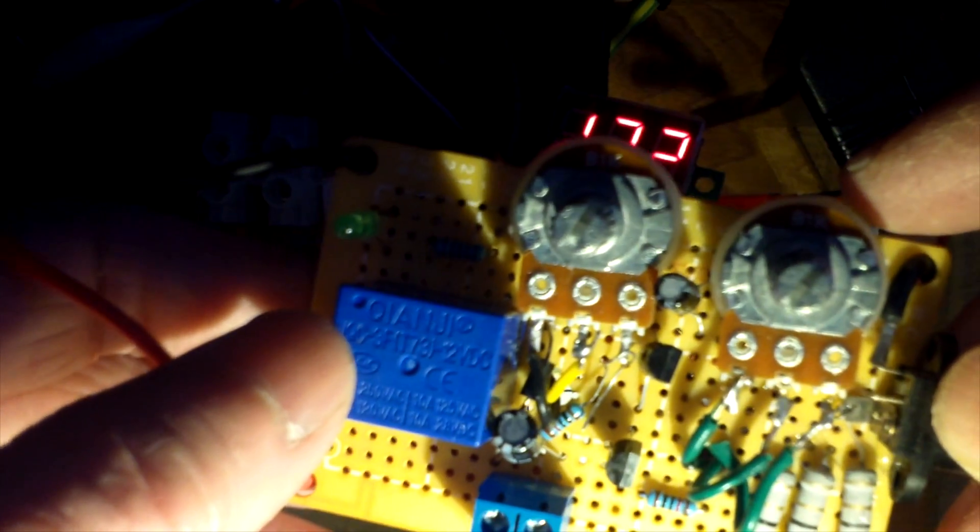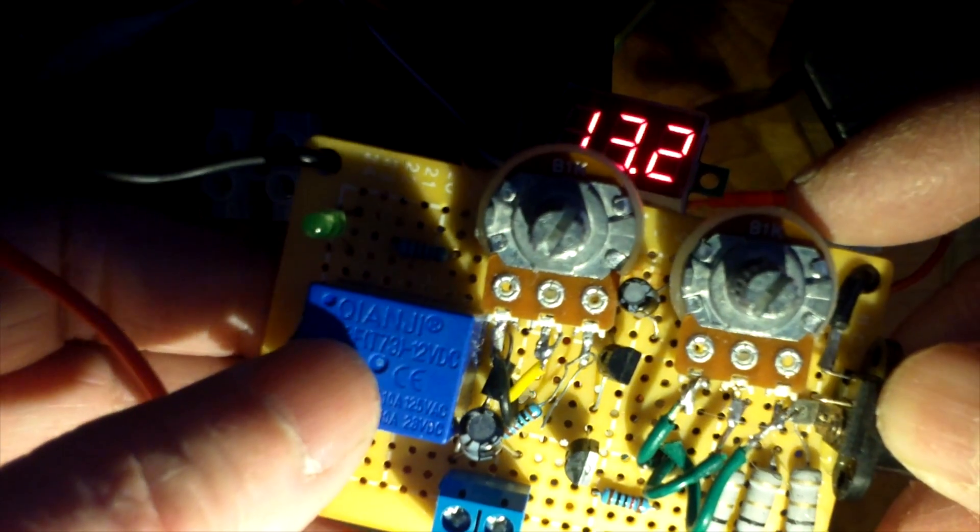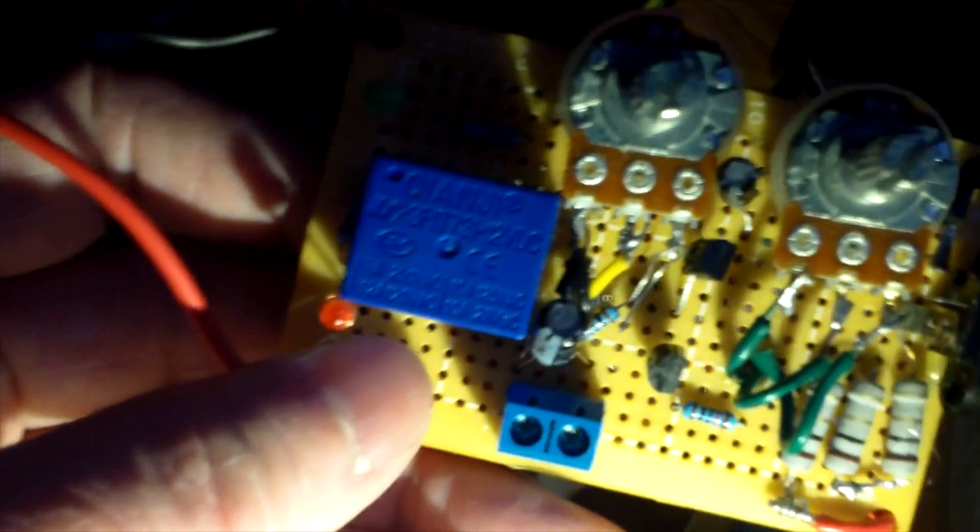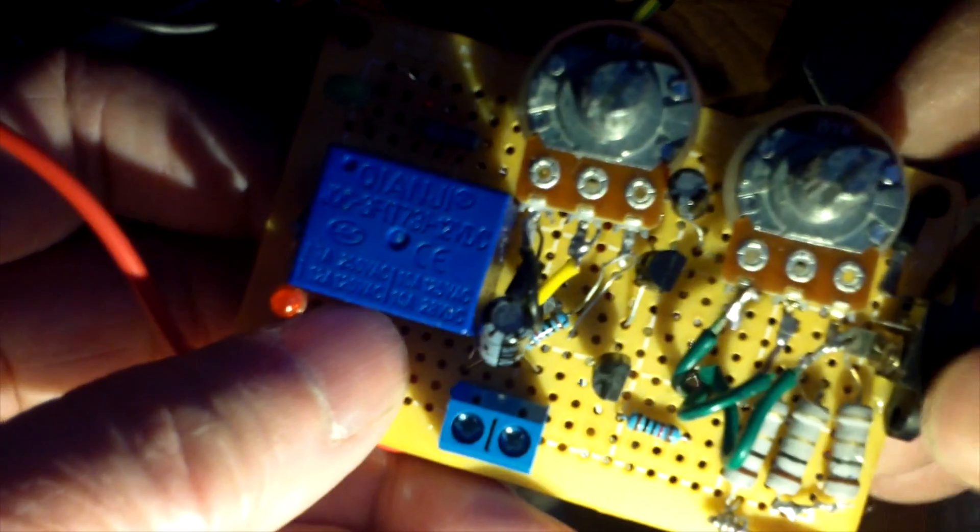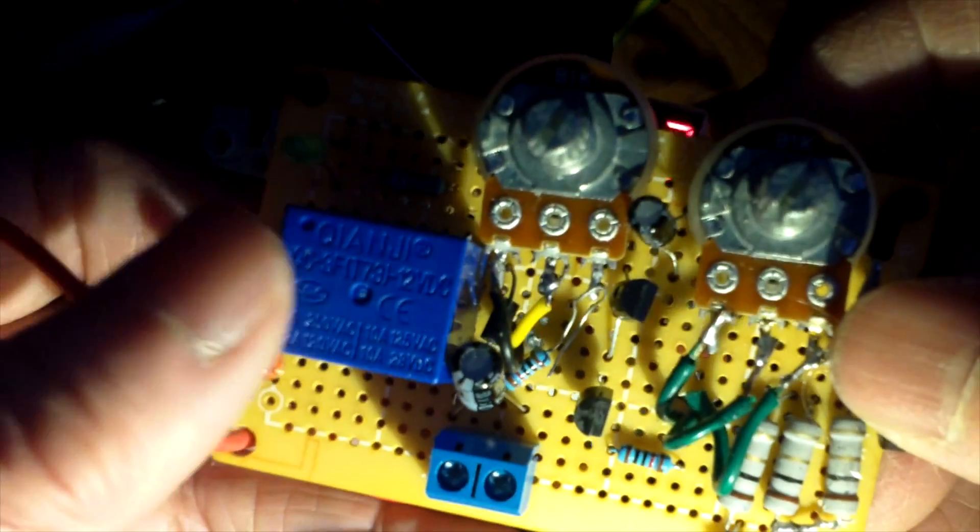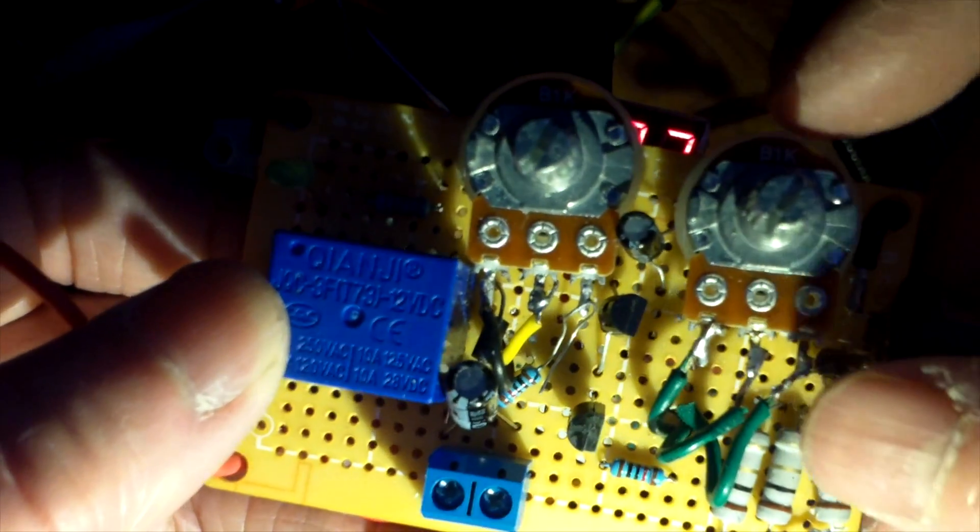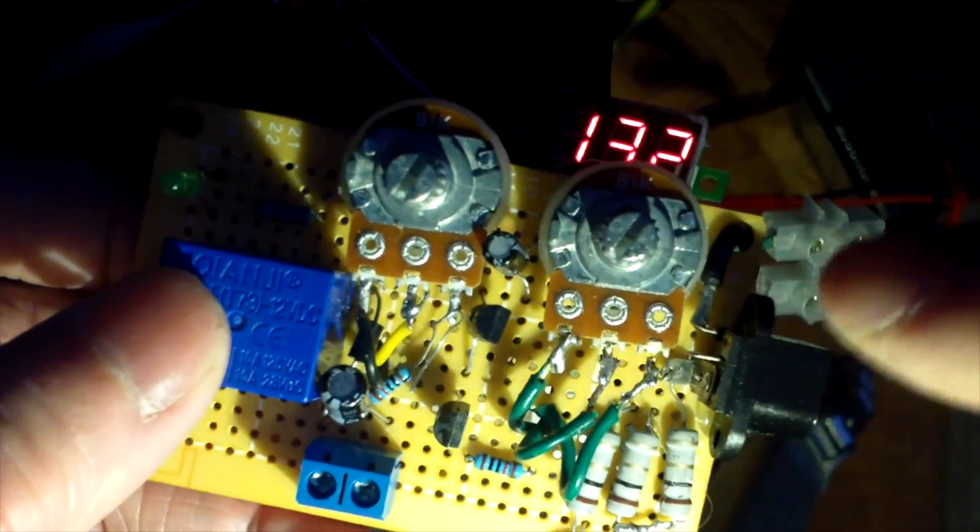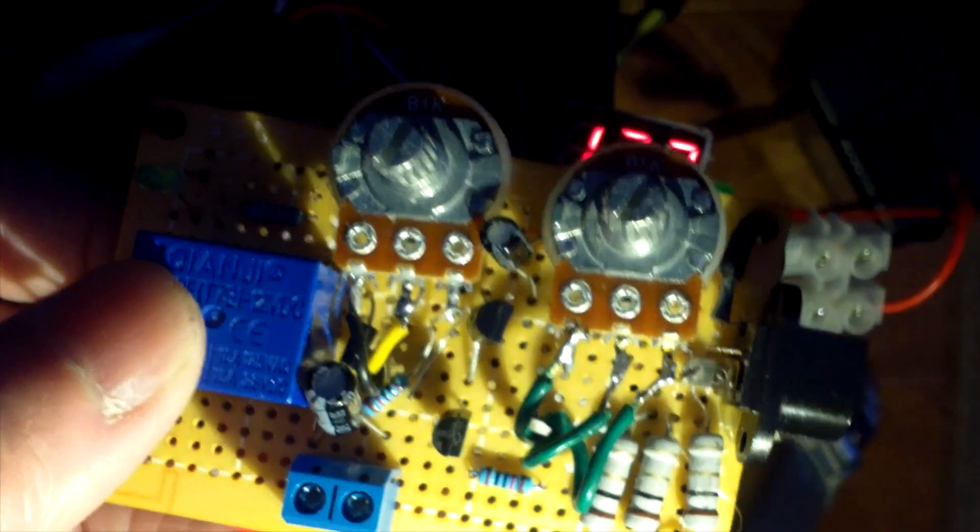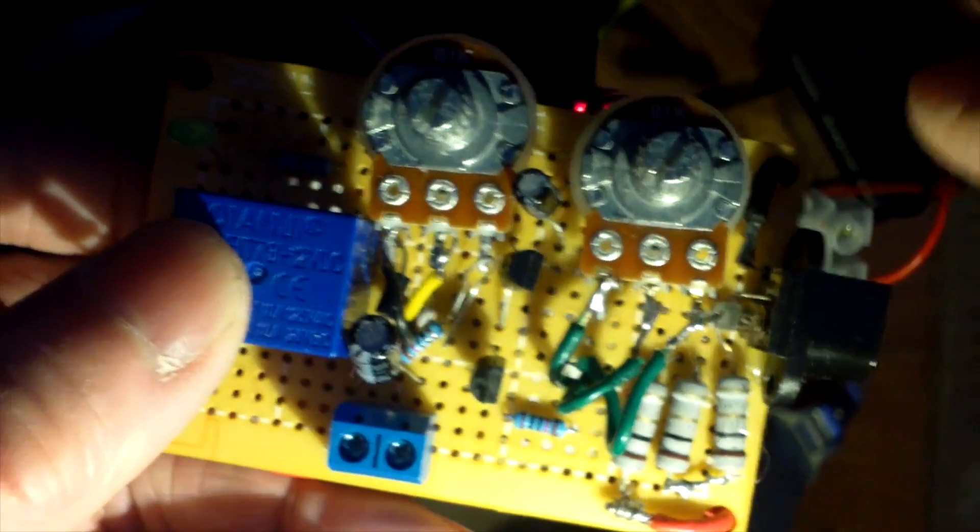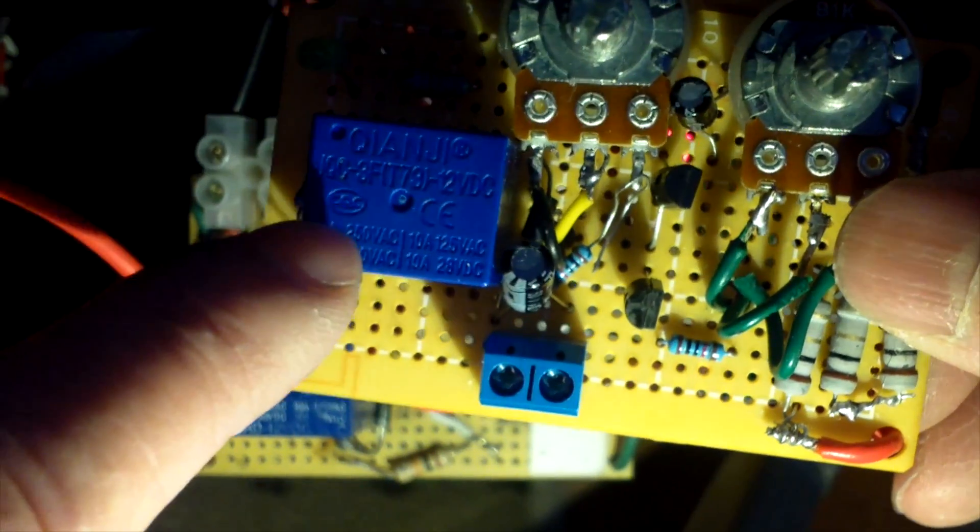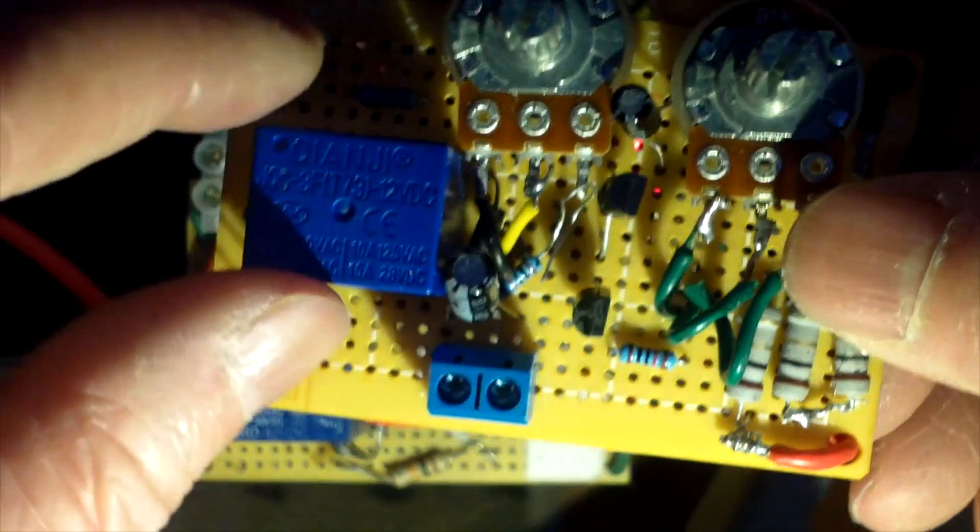The relay that I got before is called Qianji, and it's a 10 amp 12 volt relay. I had a problem with this, probably due to the hold voltage of the contacts. With this charger I can set it to charge up to a certain voltage, say 13.7, and it will automatically cut off. But the problem with this relay is it won't cut back in, it won't reconnect.